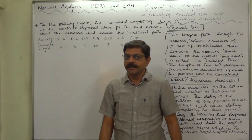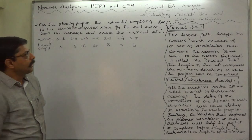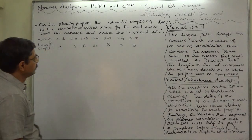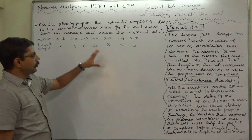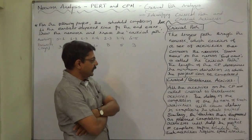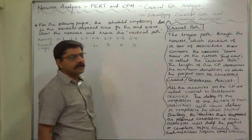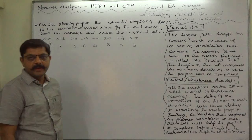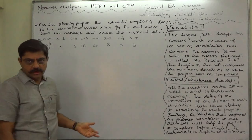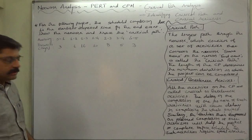Hello, namaskar and welcome. In network analysis, PERT and CPM, we have been learning how to draw simple PERT charts or network diagrams. Now let's add some new points. After drawing the PERT chart or network diagram, we are going to discuss critical path and critical or bottleneck activities. From this lecture, we are starting the discussion on critical path analysis. In this first lecture, we will learn how to trace a critical path directly on the PERT chart or network diagram without further calculations.